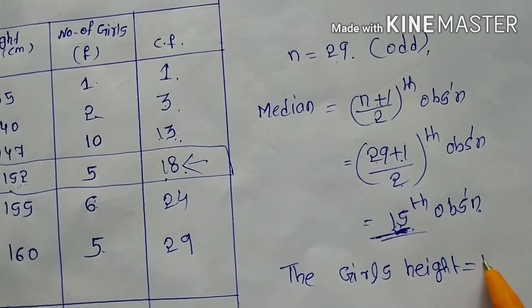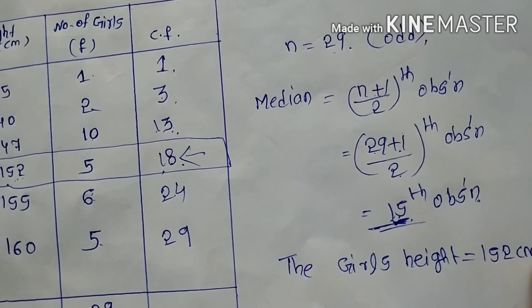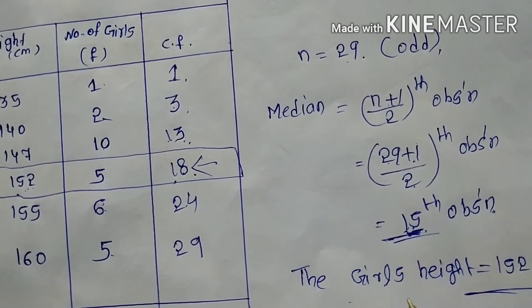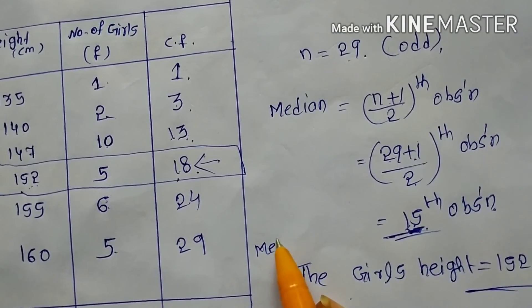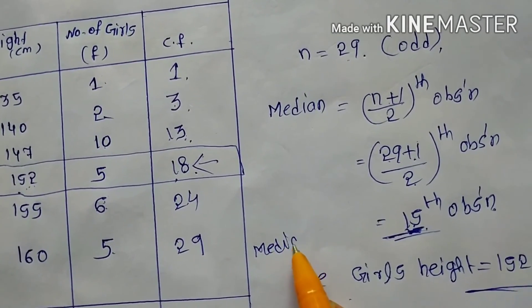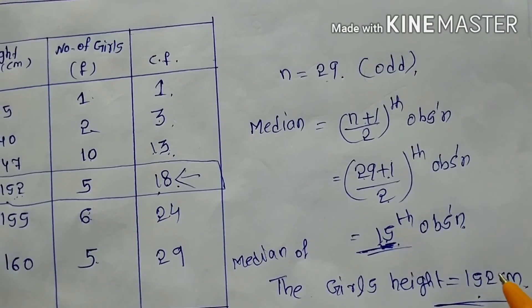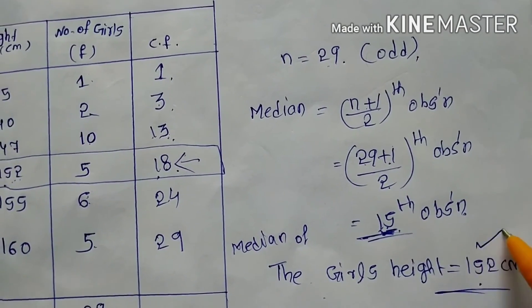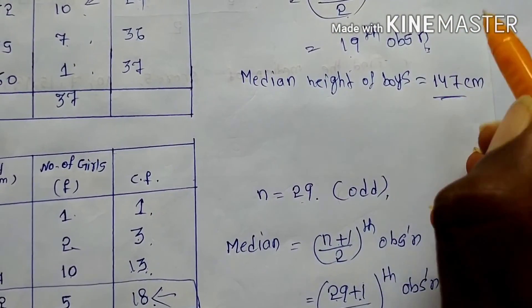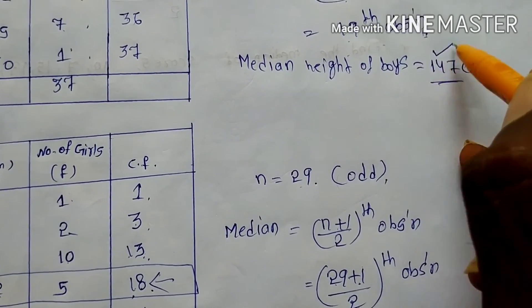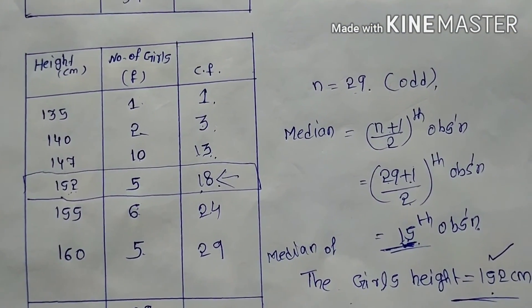The median of the girls' height is 152 centimeters, and the median of the boys' height is 147 centimeters. Thank you.